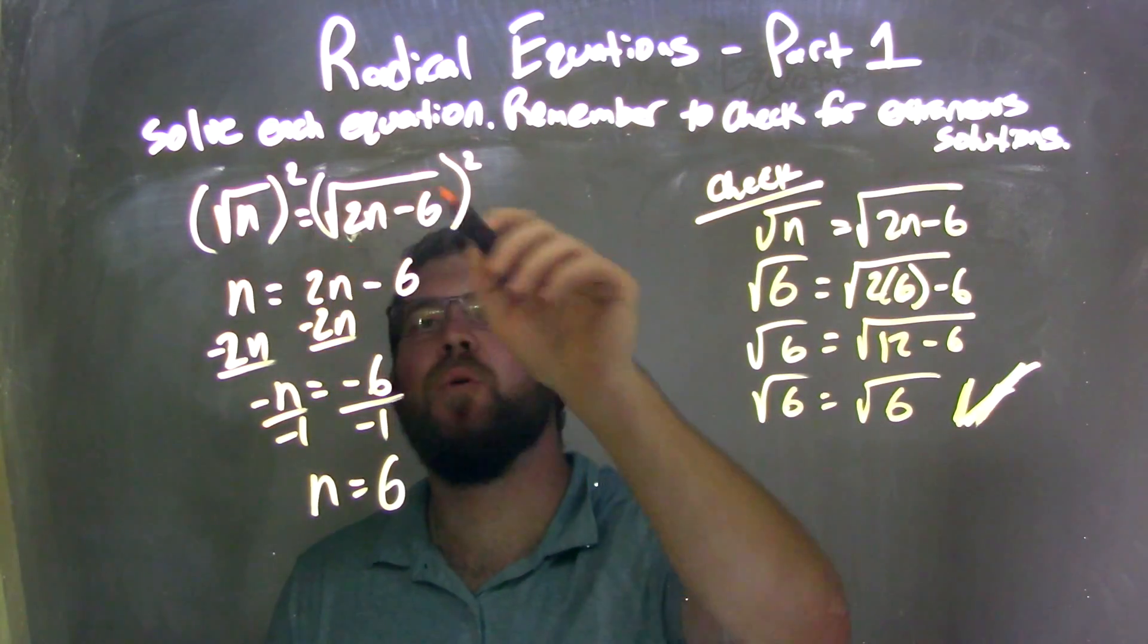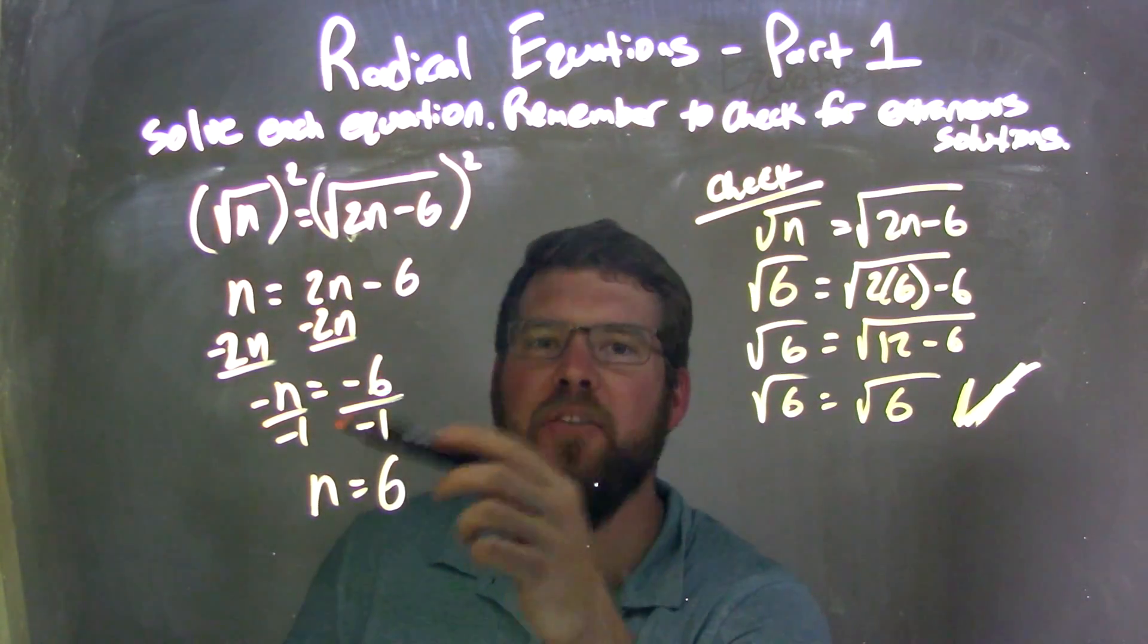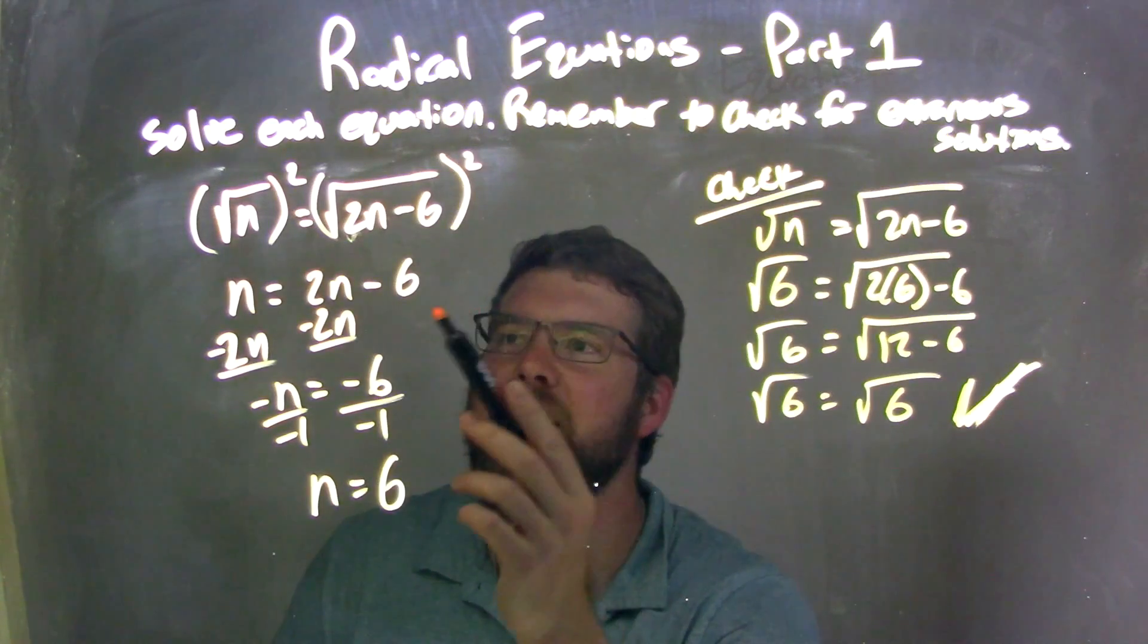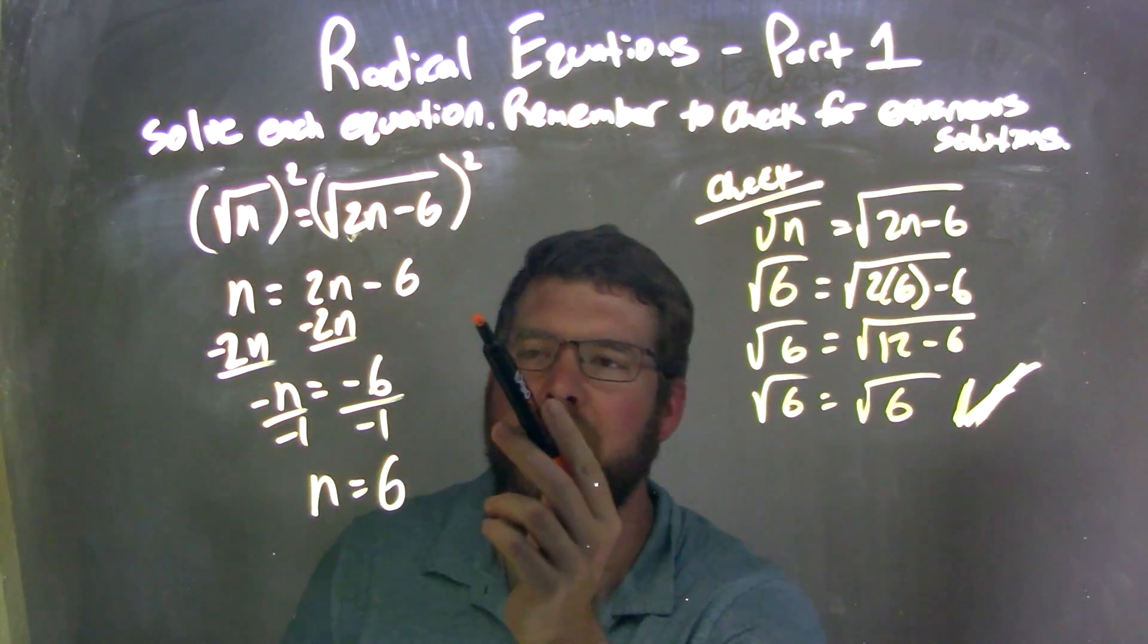We're given the square root of n equals the square root of 2n minus 6. I squared both sides, leaving me with just n on the left and 2n minus 6 on the right.